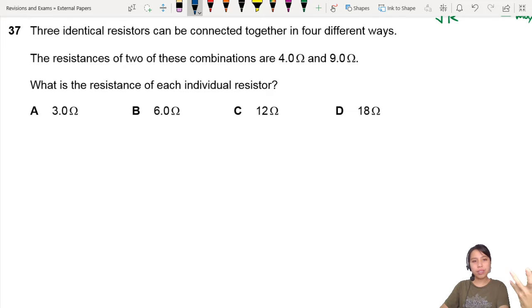Three identical resistors can be connected in four different ways. The resistances of two of these combinations are four ohms and nine ohms. How on earth are we supposed to find the resistance of each individual resistor?